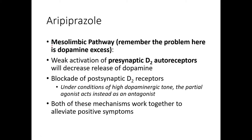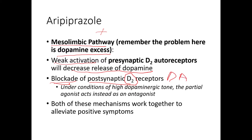In the mesolimbic pathway, dopamine is in excess, and this pathway is tied to positive symptoms. We want to reduce dopamine activity here. Aripiprazole acts as a weak agonist on presynaptic D2 autoreceptors, which decreases the release of dopamine into the synapse. On postsynaptic D2 receptors, it acts as an antagonist, because under conditions of high dopaminergic tone the partial agonist instead acts as an antagonist, since dopamine is stronger and wins competition for the receptor.